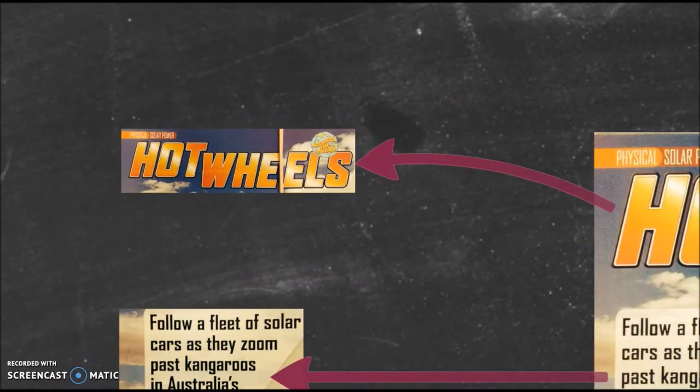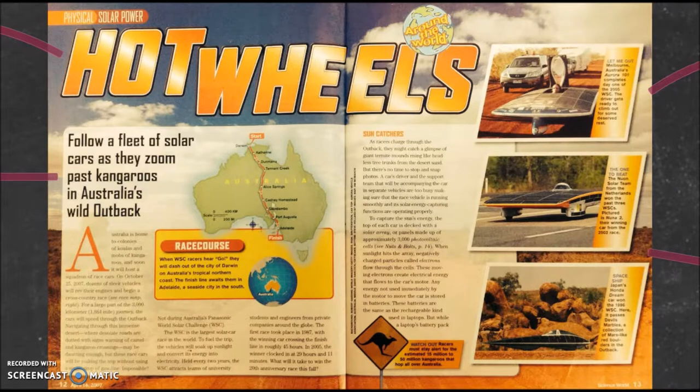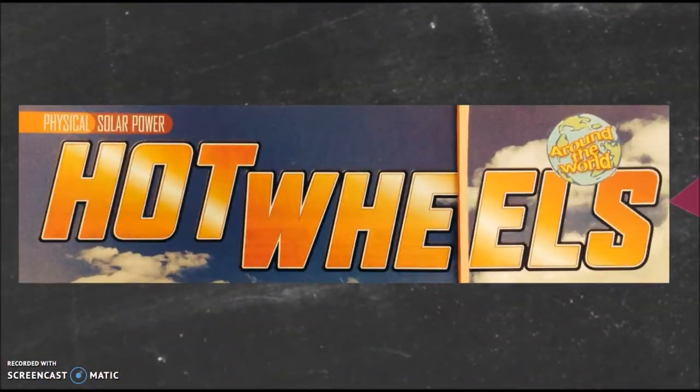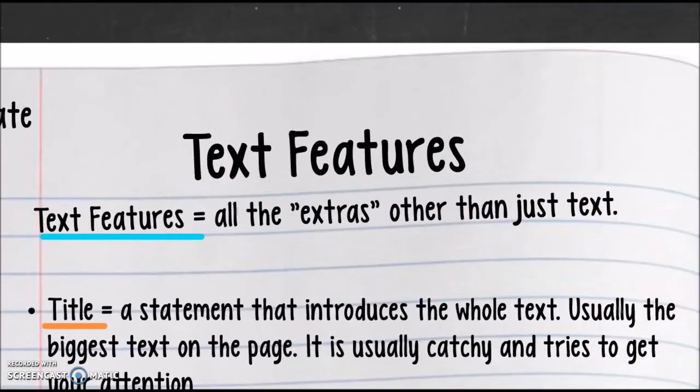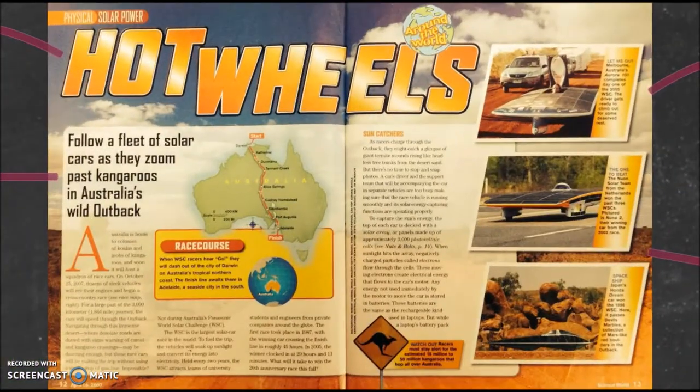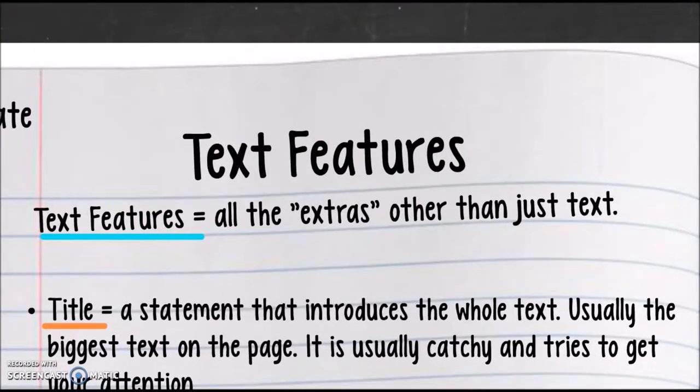What do we call this here at the very top of it in this magazine? We call this the title. And what is the title? This is the definition you should be copying down, by the way. A title is the statement that introduces the whole text. It's usually the biggest text on the page. It is usually catchy and tries to get your attention. And that's exactly what it did, did it not? So under Text Features, first thing you're going to write is title. Go ahead and get that definition. Did you need to pause it? And pause it.